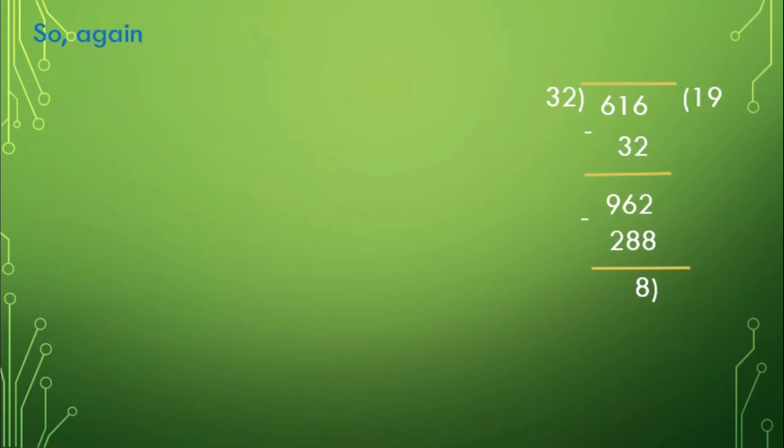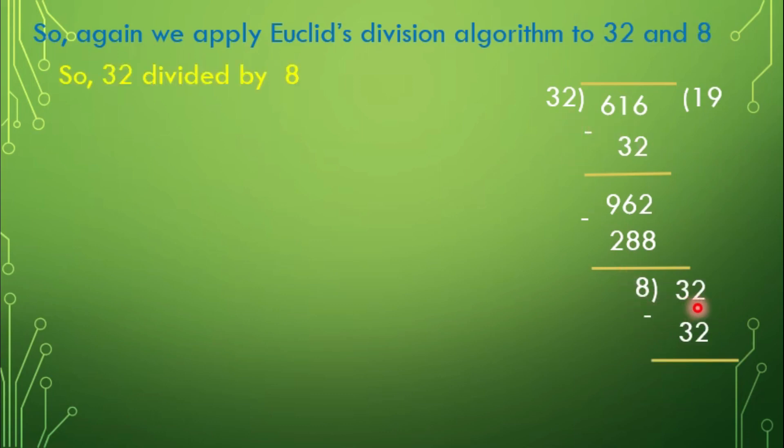So, again we apply Euclid's Division Algorithm to 32 and 8. So 32 divided by 8. After doing this division, we got quotient as 4, we got the remainder as 0. The remainder has now become 0.